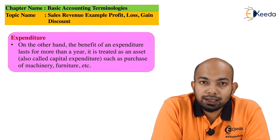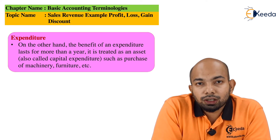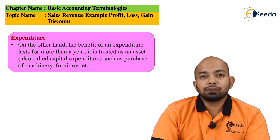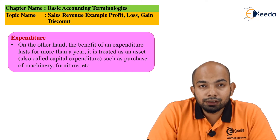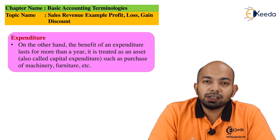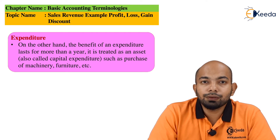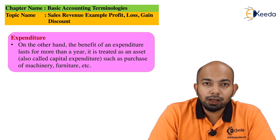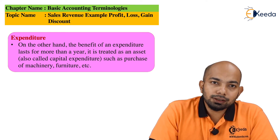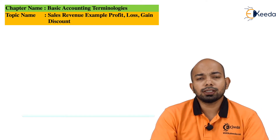There is a third category which is known as deferred revenue expenditure, which we will study in newer chapters. To give you an example, these expenditures are more of advertising expenditures. So if you have incurred heavy advertising expenditure, that is termed as deferred revenue expenditure — because the benefits of these expenses are availed for a lot more years compared to revenue or capital expenditure. The benefit of that advertising is taken for years, hence it is known as deferred and not capital expenditure.